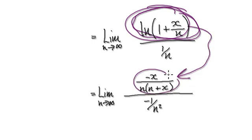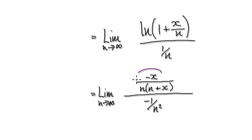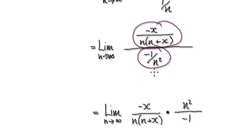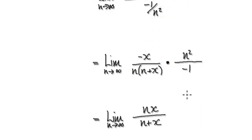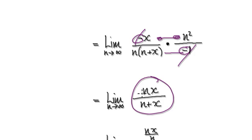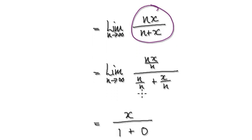So when you differentiate the top it gives you this. Now tidy this up — you've got one fraction divided by another, so visualize multiplying by the reciprocal of the denominator fraction, which gives you this. Top times top, bottom times bottom, two negatives cancel each other out — that gives you this.